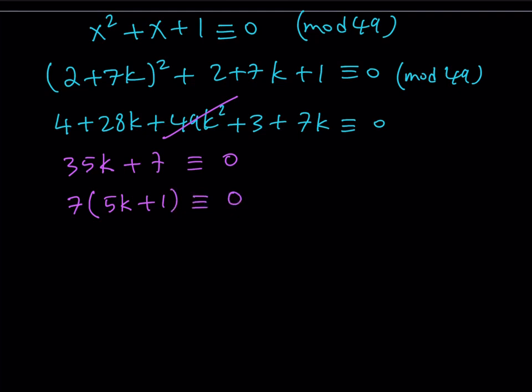We have 7 times something and the result is a multiple of 49. Therefore, 5k + 1 needs to contain a 7, right? In other words, this means that 5k + 1 needs to be 0 (mod 7). So that way you're multiplying two numbers, 7 times 7 and that becomes 49, which is 0 (mod 49). This is an important result because now we can turn this into an equation.